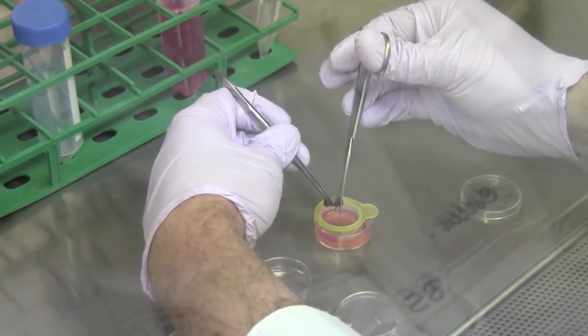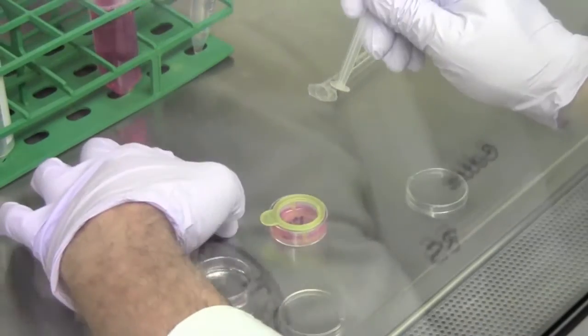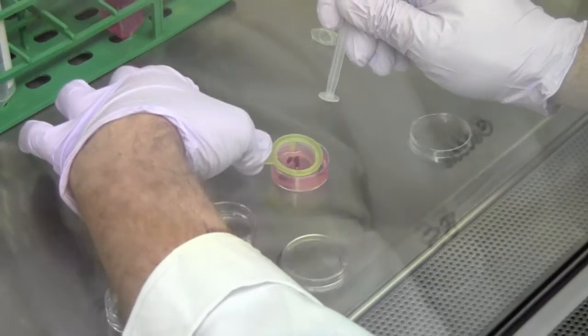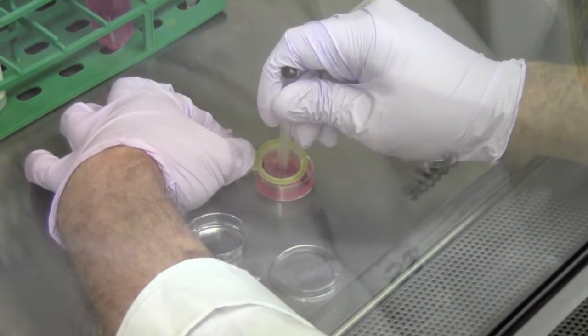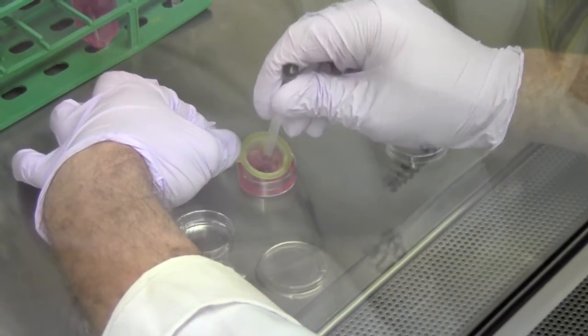Next, the spleen is cut into small pieces using scissors into a cell strainer. The back of the syringe is used to smash the spleen and pass the cells through the cell strainer into the complete medium, creating a single cell suspension.